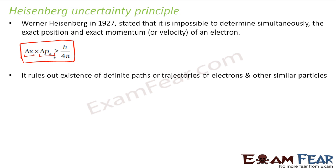Now it rules out the existence of definite paths or trajectories of electrons and other similar particles. Since it doesn't talk about exact position or exact momentum, it will not talk about definite paths of electrons. Bohr's model was talking about a definite or fixed circular path which the electron was following. But if Heisenberg's uncertainty principle is true, then an electron cannot have a definite circular path, because we will not be able to define its position and momentum accurately.